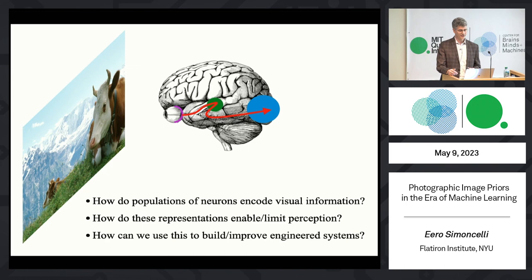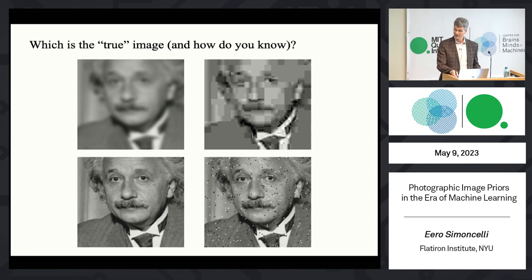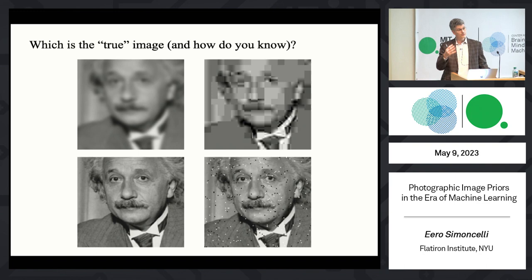Sometimes those priors are quite explicit, sometimes implicit, sometimes built into the algorithmic structure. You know that you have priors for images — if I ask you which of these images is the correct or true image and which ones are distorted, every one of you in the room can answer the question and you'll all get it right. How does your visual system know? What is it that you've learned through your lifetime about images that tells you what they're supposed to look like — and what they're not supposed to look like?